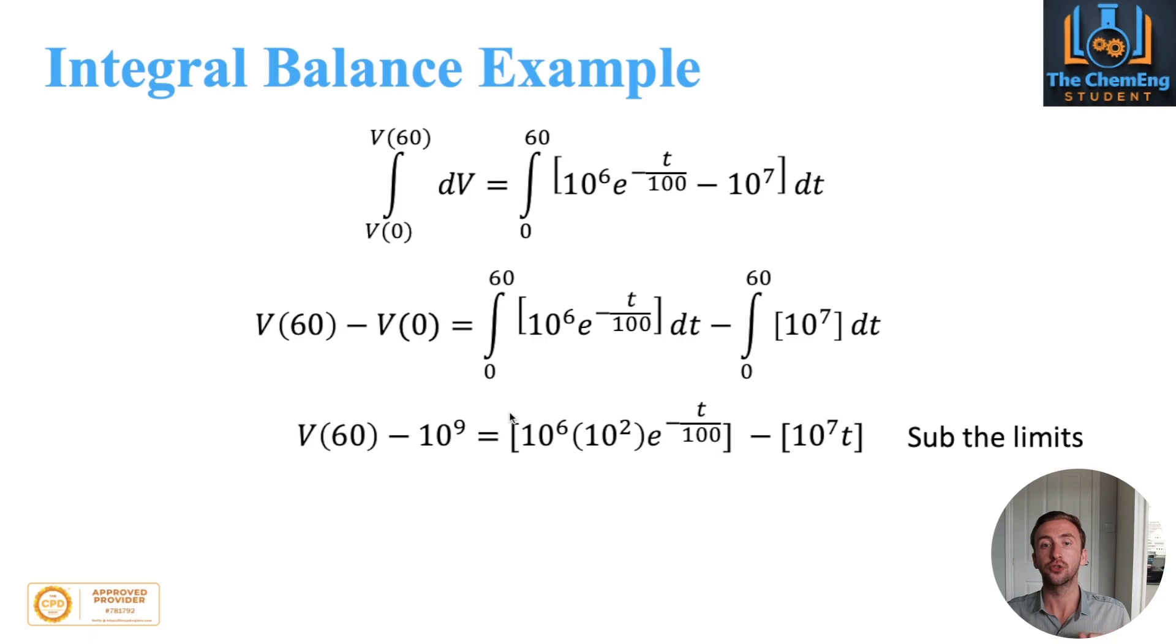And what you would end up with is V, so the volume of liquid water at 60 days is 4.45 times 10 to the power 8 liters. And that makes sense because we started off with 10 to the power 9, and after 60 days we've now went to 4.45 times 10 to the power 8. So I hope you can see how the transition between differential and integral balances work.